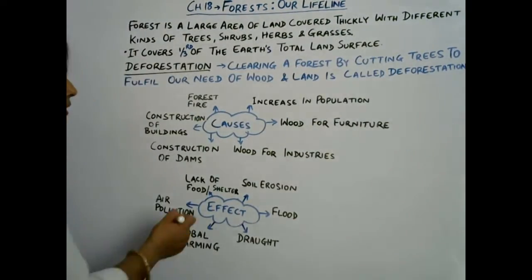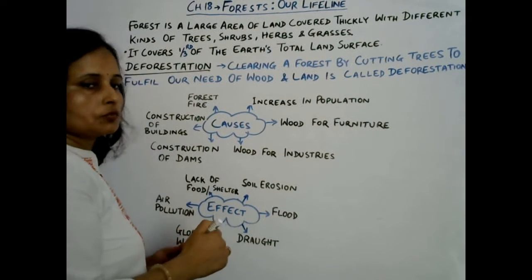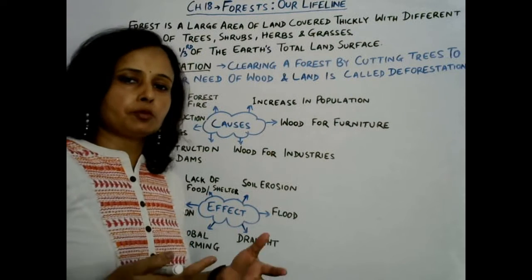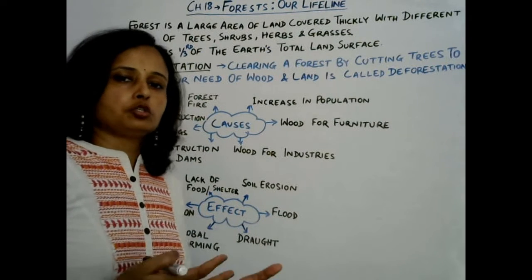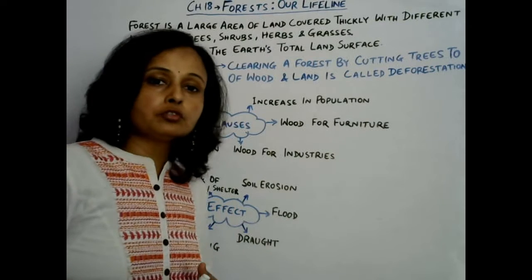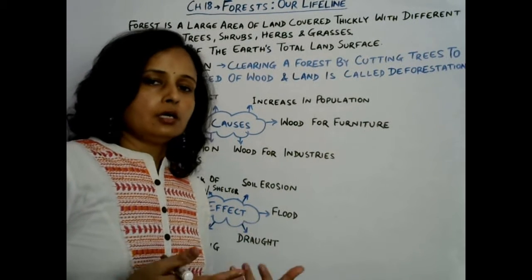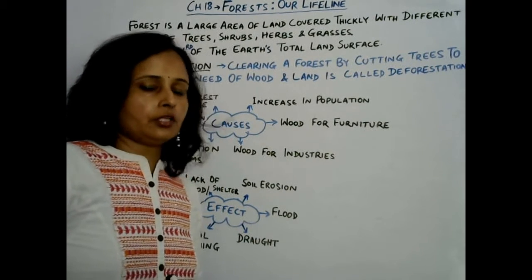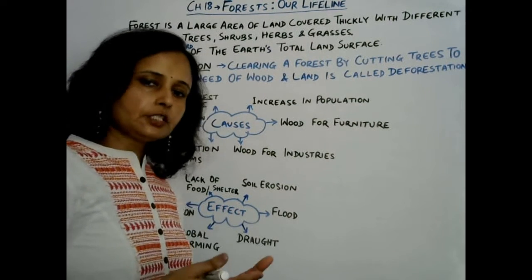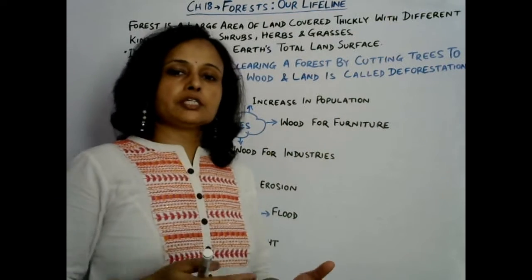So let us discuss the causes of deforestation. First, increase in population — obviously population is increasing. Due to the increase in population, we need more food, and for that we need more cropping land, and for that humans have to cut forest.